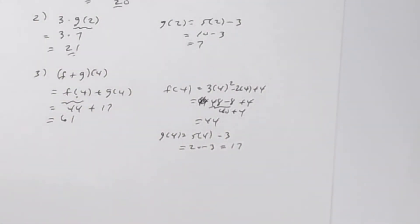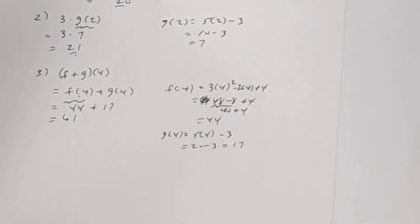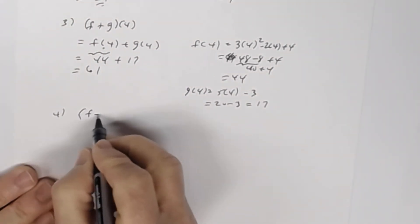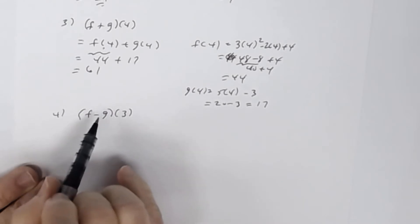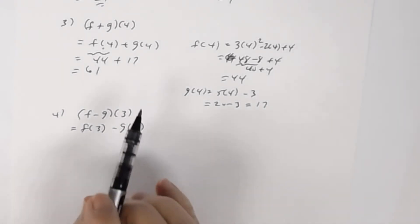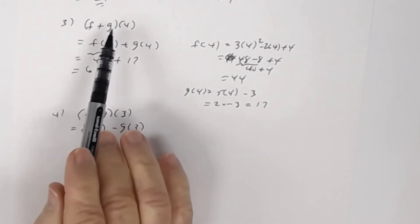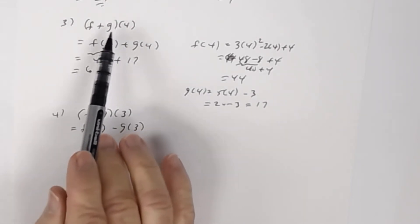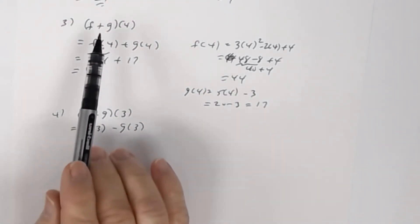The answer to number 3 is 61; the work is on the other paper. For number 4, we have (f − g)(3). Just like the previous one, by definition this means f of 3 minus g of 3. Remember from the lessons: this is not a distributive problem — it does not mean multiplication. The notation (f + g)(4) means f plus g evaluated at 4, not f plus g times 4.